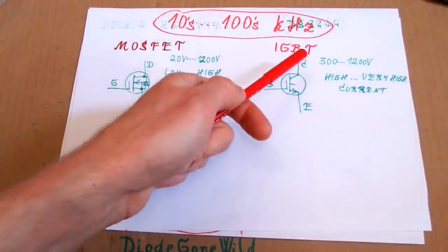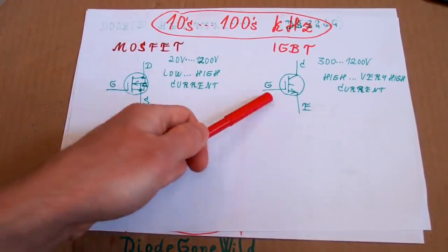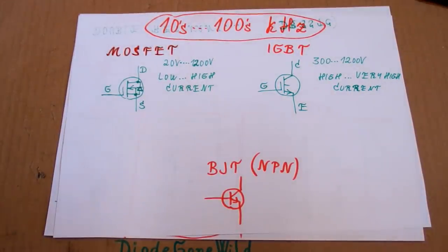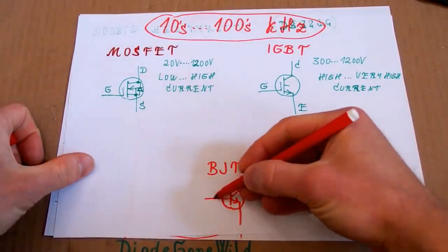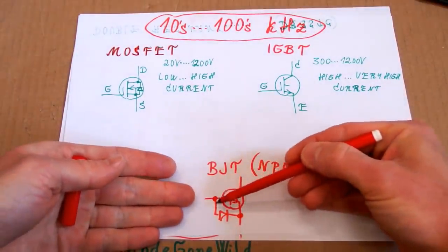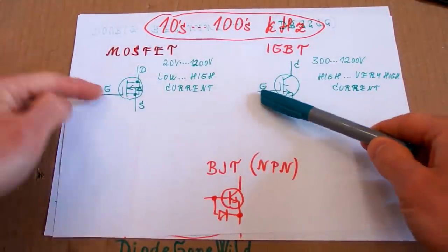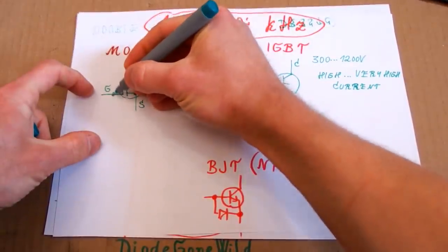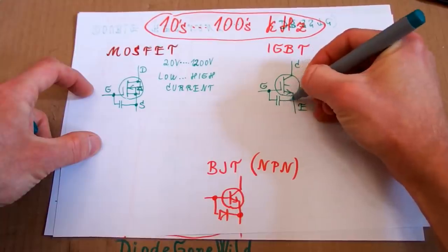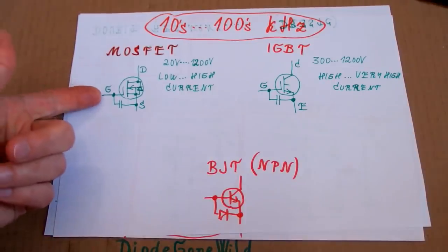MOSFETs and IGBT transistors are actually quite similar. They both have a gate instead of a base. They are not like a bipolar transistor which requires a low voltage, high current to keep it on — the base of a bipolar transistor acts as a diode and in big ones you have to constantly supply a high current through it. But in a MOSFET or IGBT the gate is basically acting as a capacitor. To turn it on you charge the capacitor, to turn it off you discharge it, and in a steady state the gate doesn't draw any current.